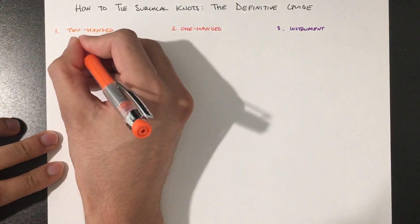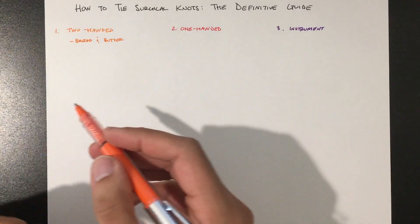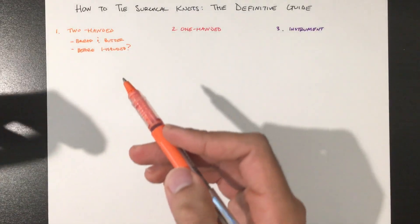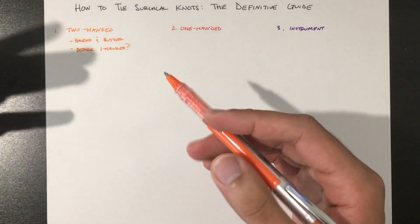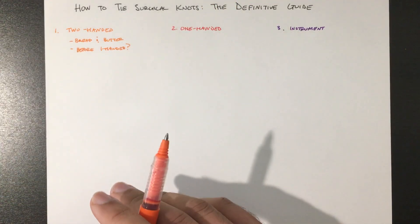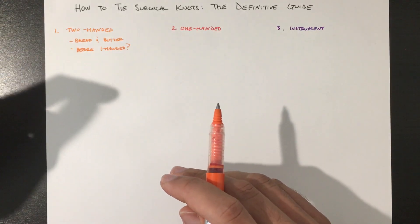Two-handed, this is your bread and butter. Some attendings are going to want you to demonstrate a two-handed tie before you move on to one-handed. I don't necessarily agree with this, as you can be good at one-handed and bad at two-handed or vice versa, but I understand their rationale. They want to make sure that you understand the basic principles of tying strong square knots.